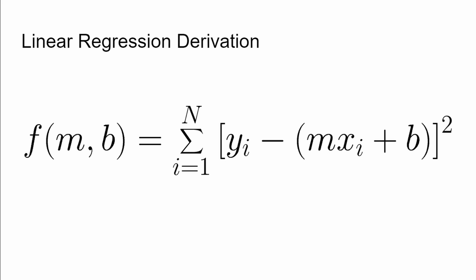And so we want to find the values of m and b that minimize this function. So going back to calc 1, you do that just by taking that derivative and setting it equal to 0. Now we have a two-dimensional function, so we have to differentiate with respect to both m and b.